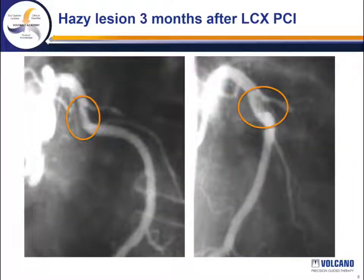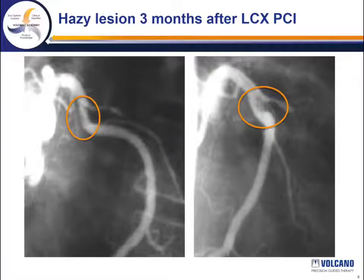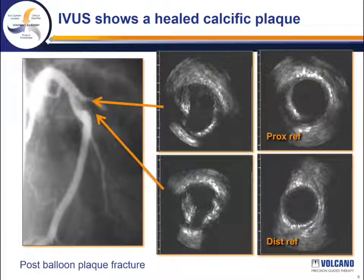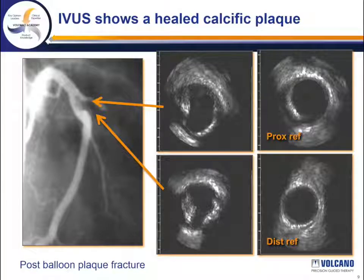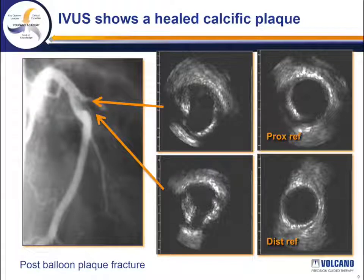Here's another patient who returns three months after balloon angioplasty of a left circumflex. There's a hazy lesion in the proximal circumflex at the site of the previous dilatation, raising the question of a PCI complication. IVUS shows a large calcified plaque that has been split during the previous intervention and is actually widely patent with no evidence of neointimal hyperplasia — essentially a post-balloon plaque fracture which has healed very nicely.